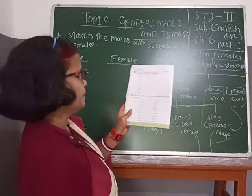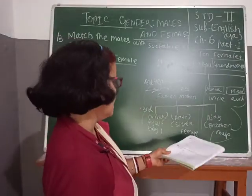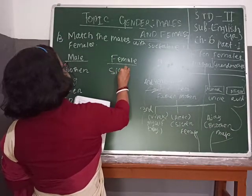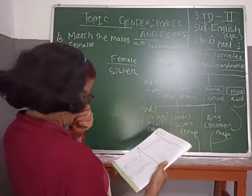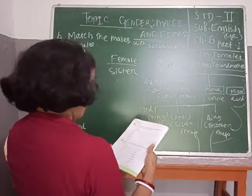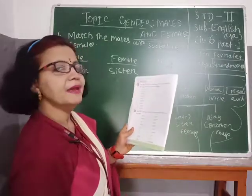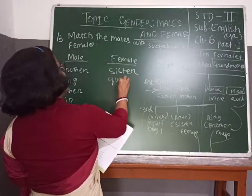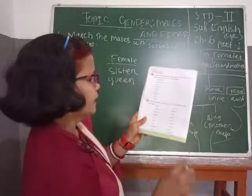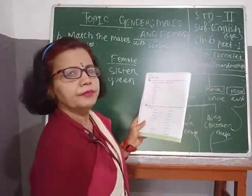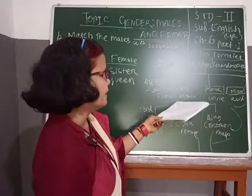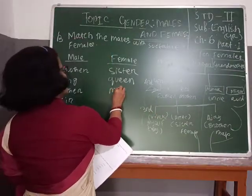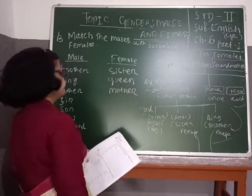Brother — brother's female is sister. S-I-S-T-E-R. Next: king — king's female is queen. Q-U-E-E-N. Number 3: father — father is male, so his female is mother. M-O-T-H-E-R.